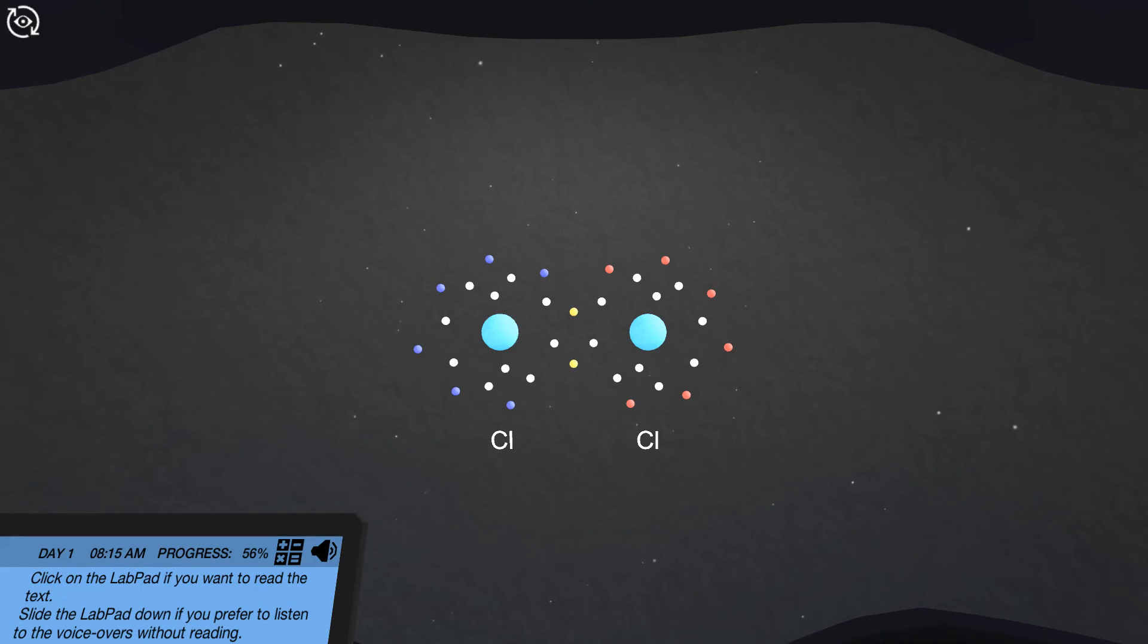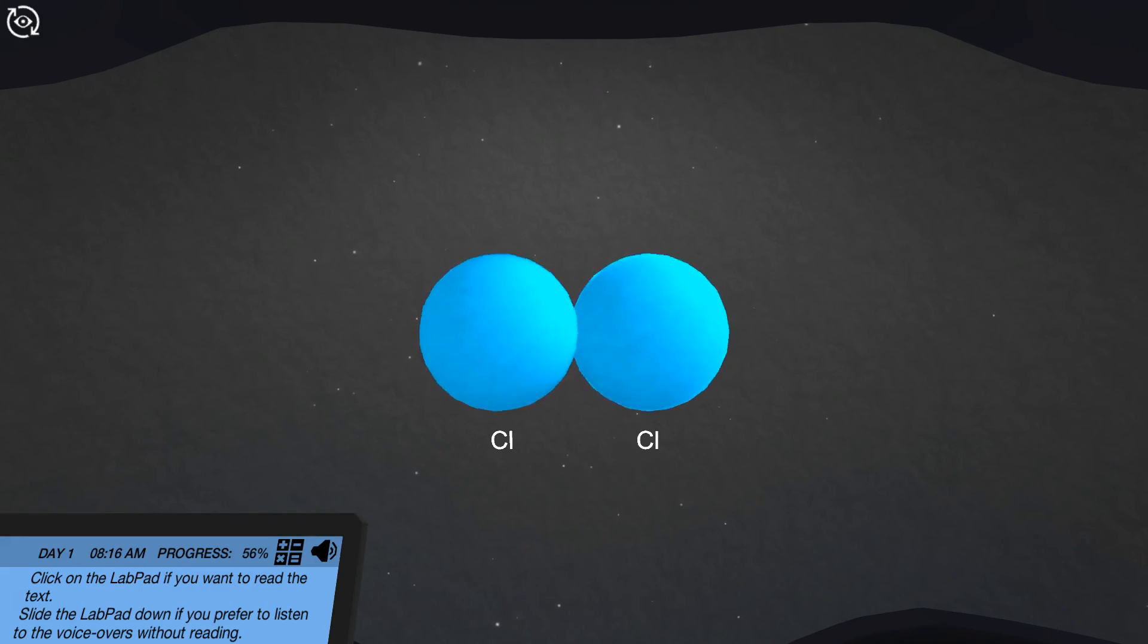Shared electrons move in between the valence shells of both atoms. The strong attraction of each shared electron to both atomic nuclei stabilizes the system and establishes a strong covalent bond between both chlorine atoms.